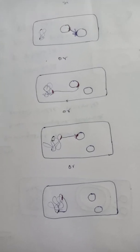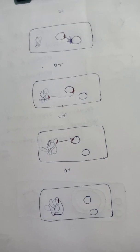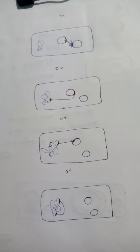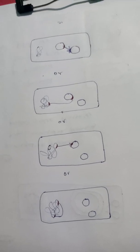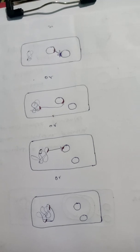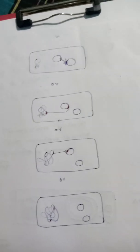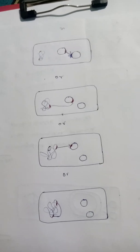So that is about plasmid DNA and transposons. Plasmid DNA acts as a vector, and transposons are transferred from one DNA to another DNA. Thank you.